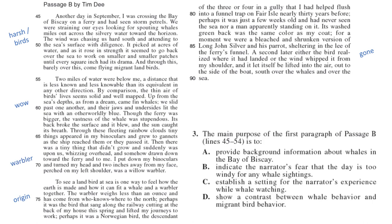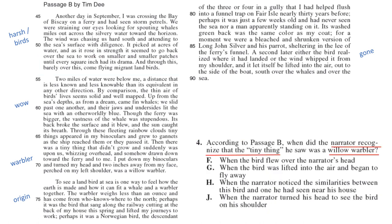Number three: the main purpose of the first paragraph is to do what? Is it A — provide background about whales? No, that's not what the whole passage is about; it's about birds. B — indicate the narrator's fear the day is too windy for whale sightings? Again, this is mostly about the bird. C — establish a setting for the narrator's experience while whale watching? Yes, the narrator is whale watching and then there's a bird — so C. D — contrasting whale behavior and migrant bird behavior? That one's out.